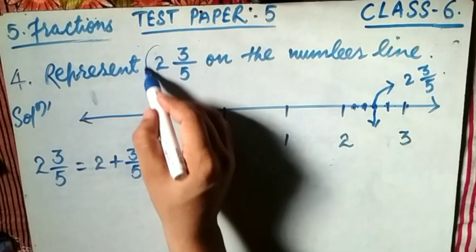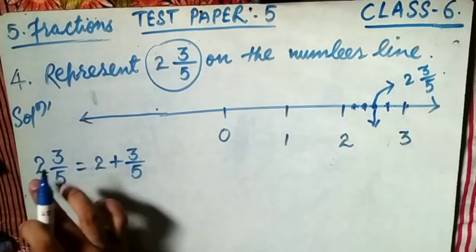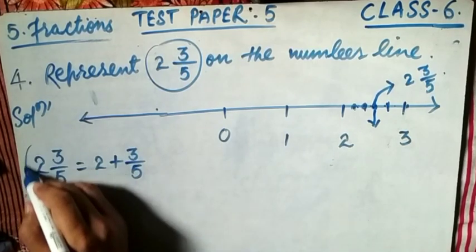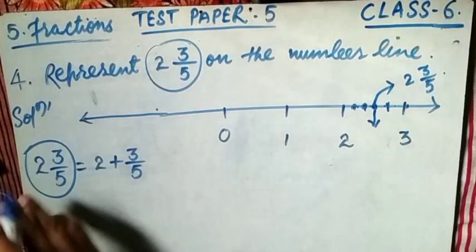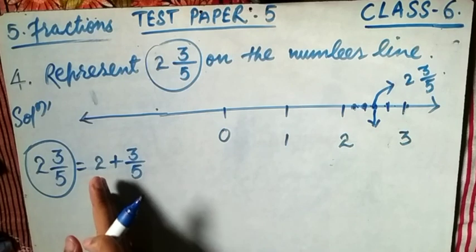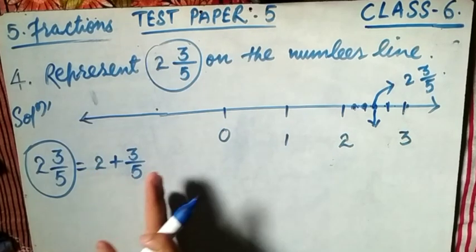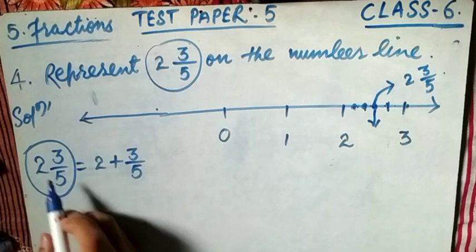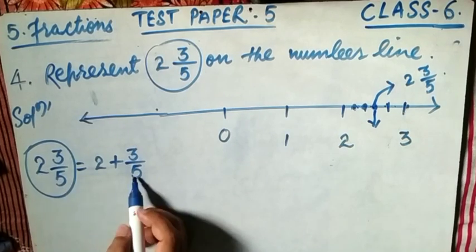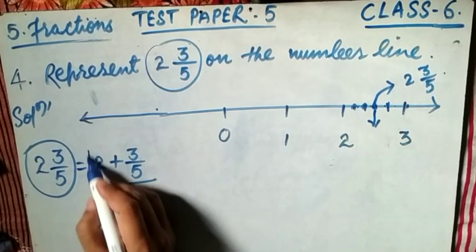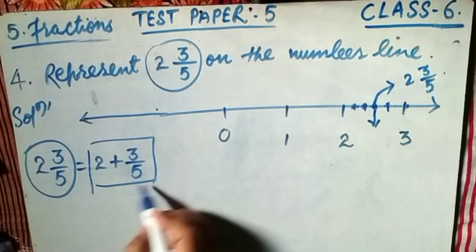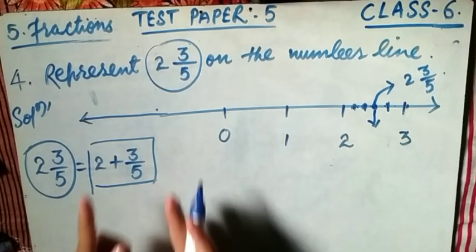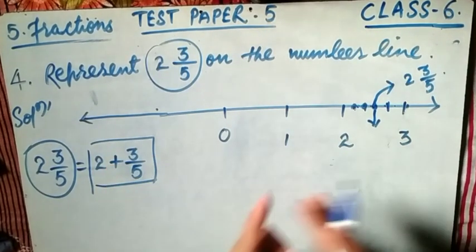There is no negative sign here. Now 2 and 3/5 is a mixed fraction, and we write it as the sum of a natural number and a proper fraction: 2 plus 3/5. So 2 is on the number line, and 2 plus something means it is to the right of 2, meaning it is greater than 2.